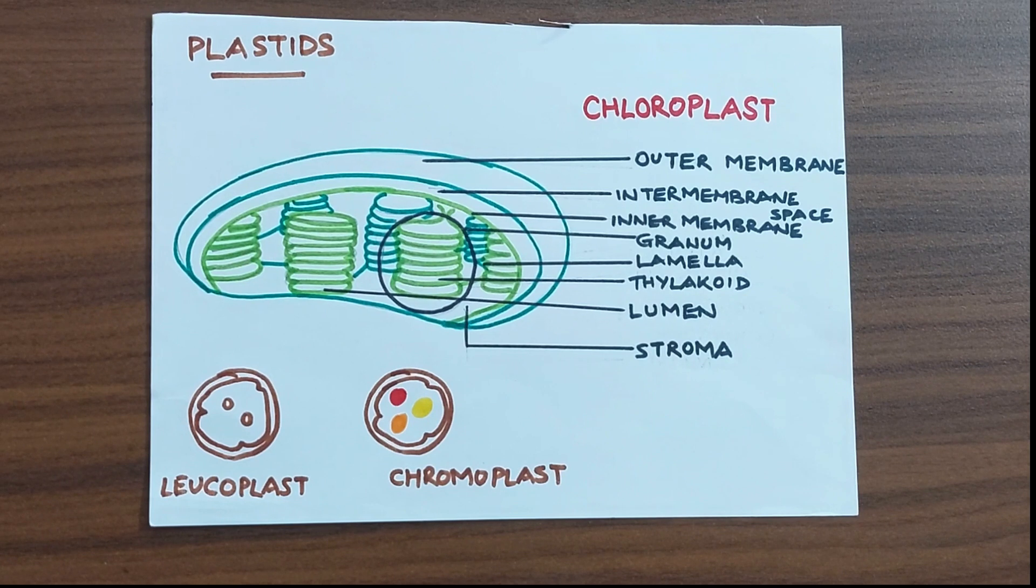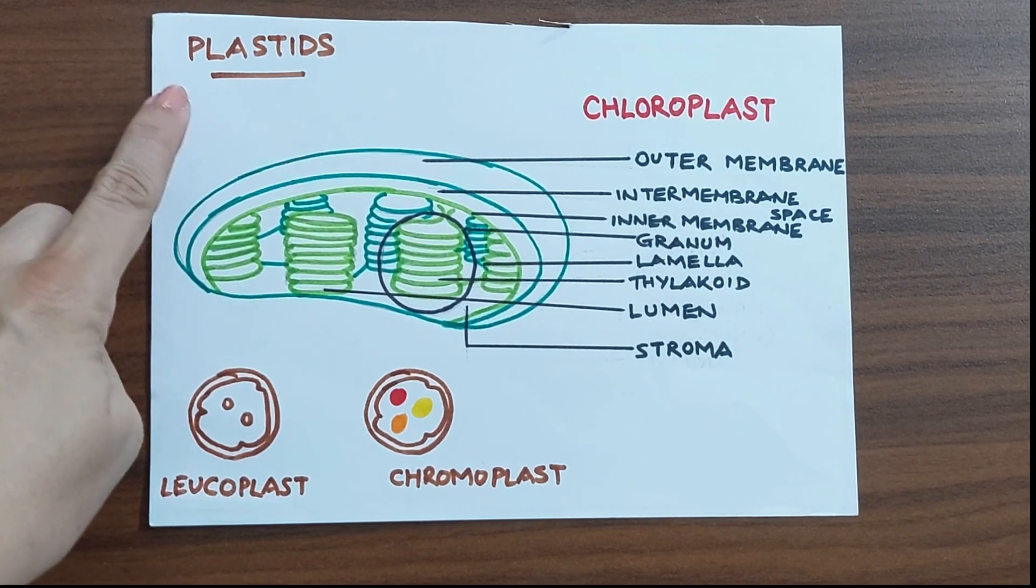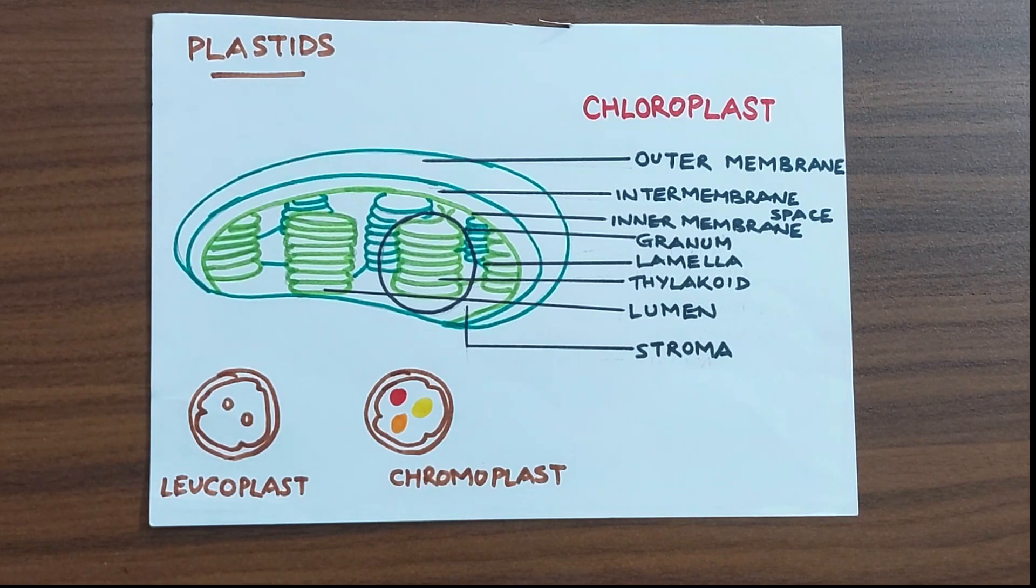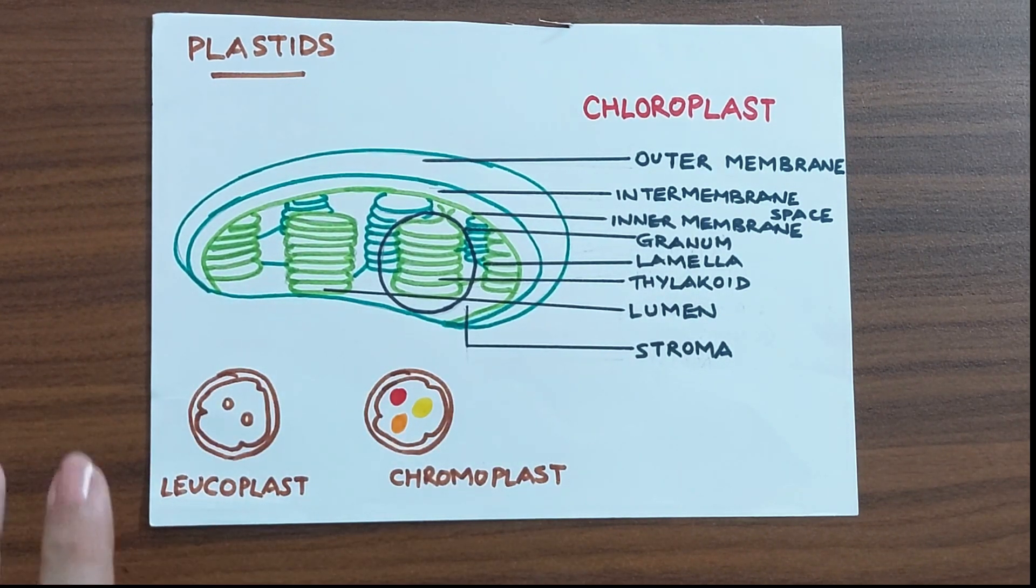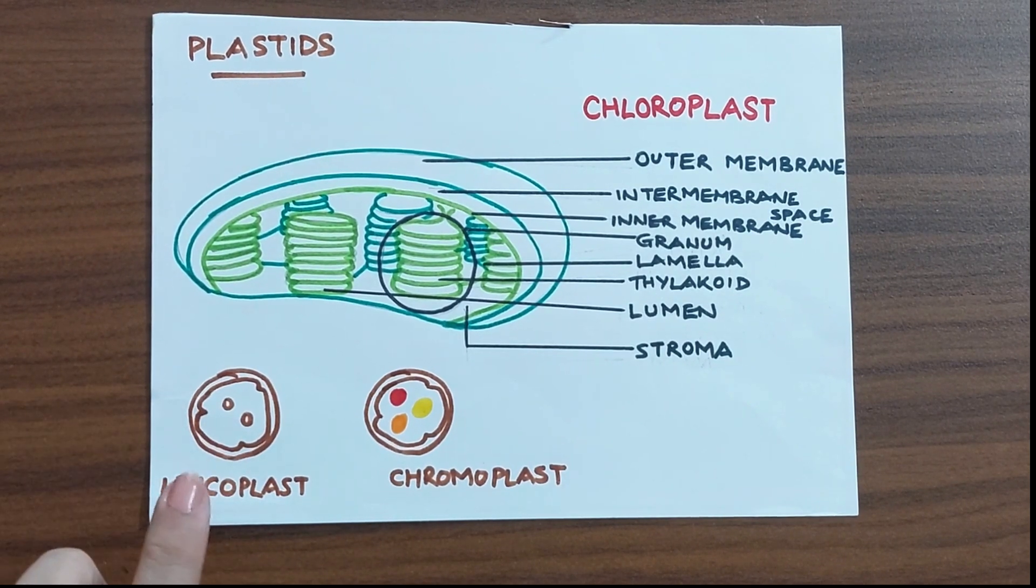Let us now look at a very interesting organelle which is specific to plants which is known as the plastids. Plastids are membrane bound organelles and they contain pigments. So based on the type of pigment they contain they can be either leukoplast, chromoplast or chloroplasts. Their function also depends on the type of pigment that they contain.